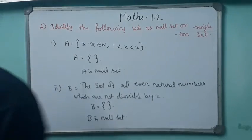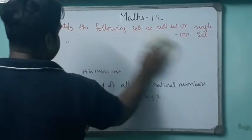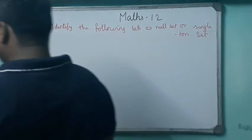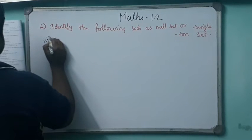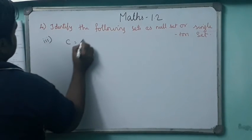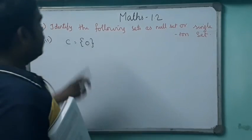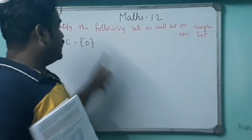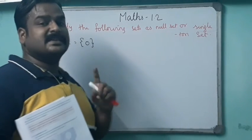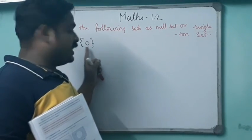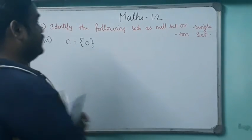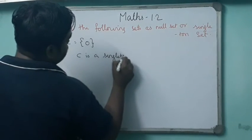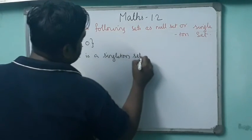Sum number 3: set C equals {0}. This set contains only one element — zero. Therefore, set C is a singleton set.